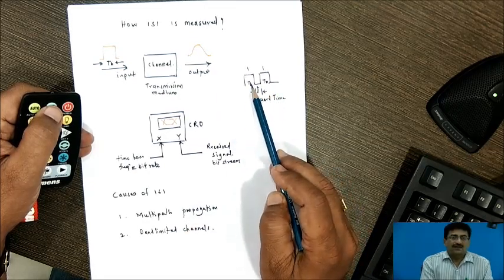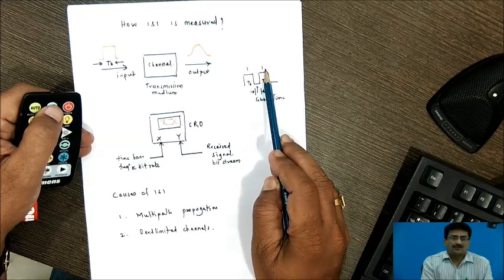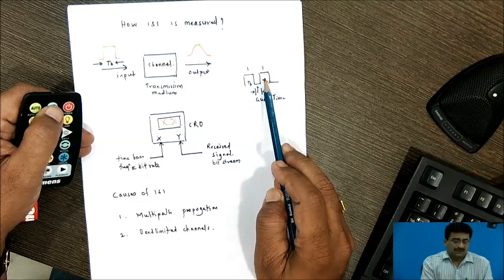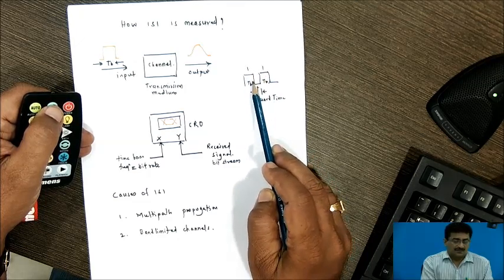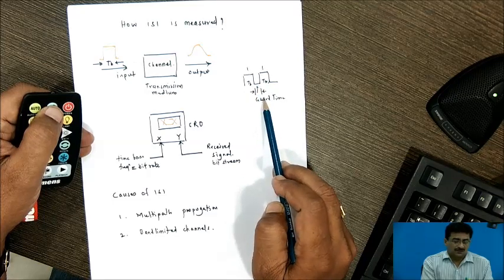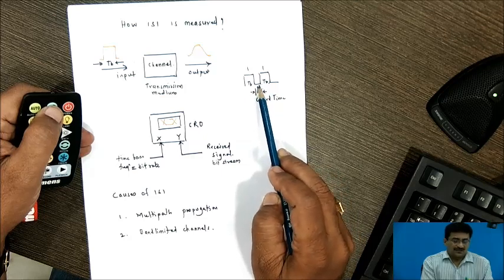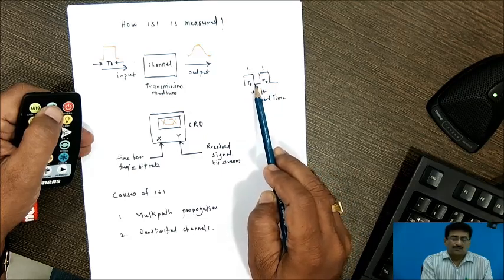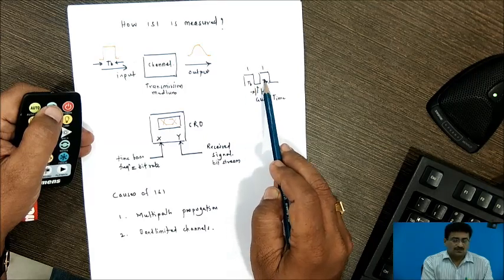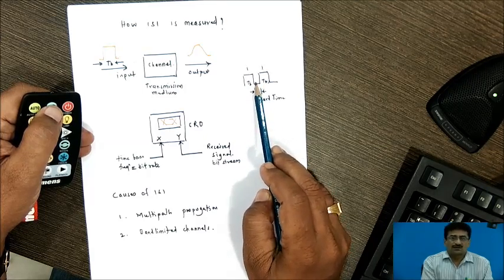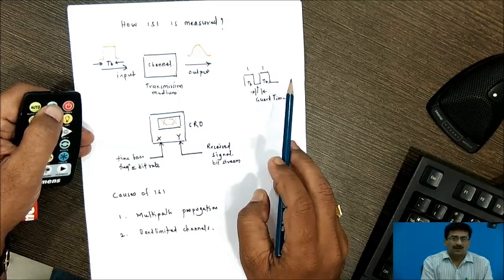So even when we increase the bit rate, here I have shown the two, say for example, one and one, suppose these are the two bits and these two bits are separated by some certain bit time interval that generally known as guard time. So when the bit rate is increased, definitely what is going to happen that the bit, whatever the guard time that is going to be reduced. So these two bits will come closer and closer. So that is also the reason why we observe inter-symbol interface.